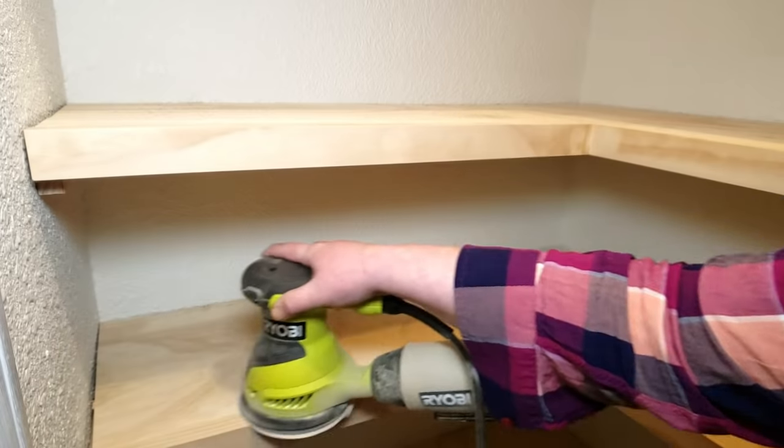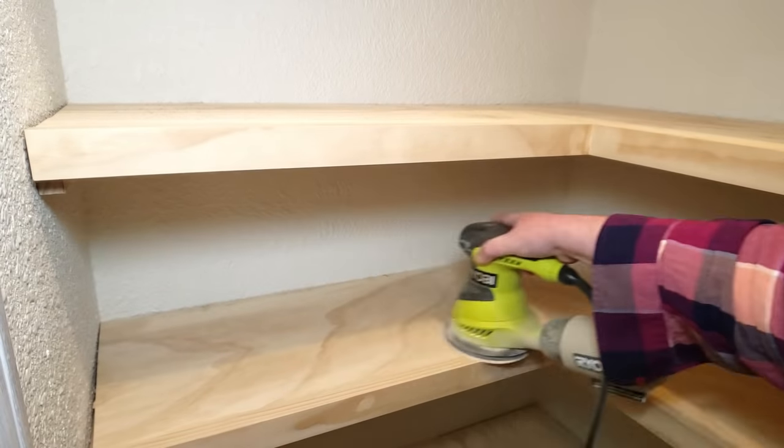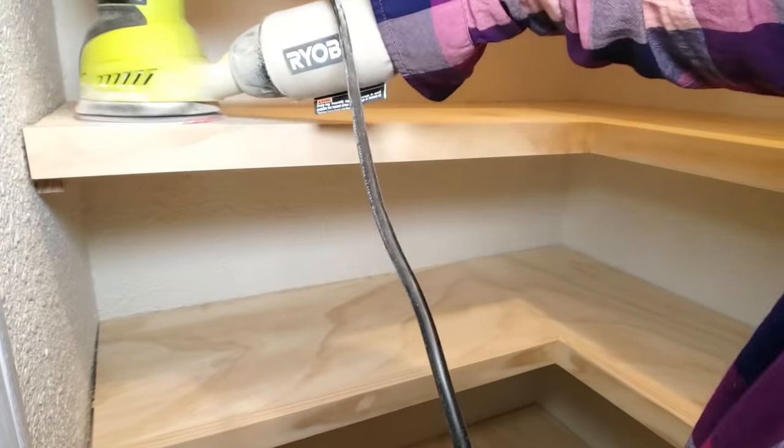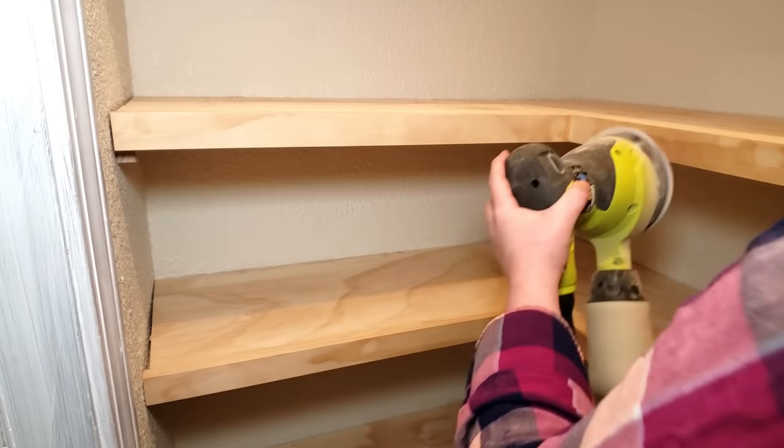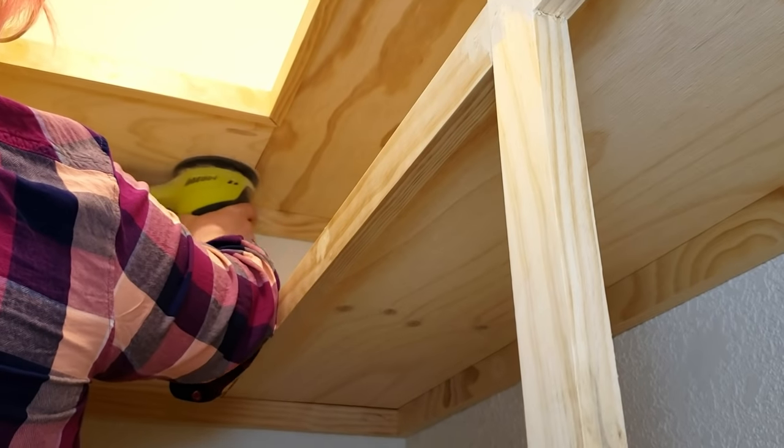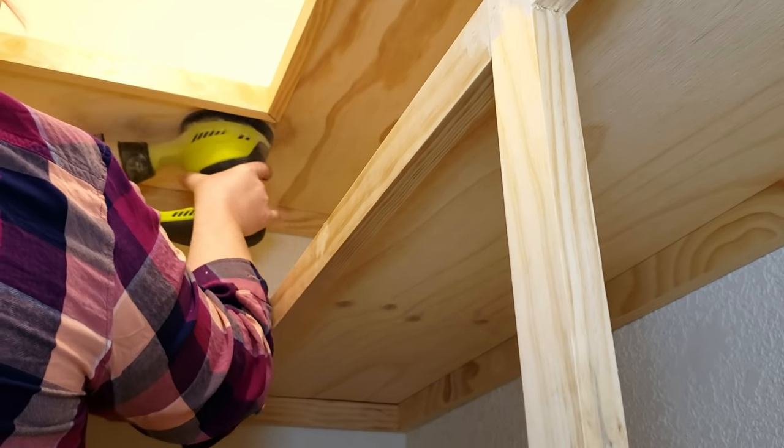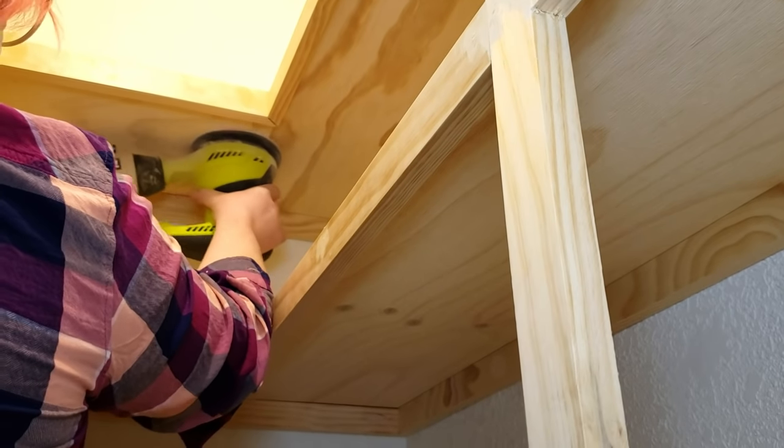I used my orbital sander with a fine grit sandpaper to go over all of the wood putty and pocket holes, as well as the top of the shelves and the shelf facings to make sure it's all smooth and seamless. I did have to switch to a coarse paper for a few of the pocket hole plugs that needed a little bit more sanding, but then I went back over them with that fine grit sandpaper.